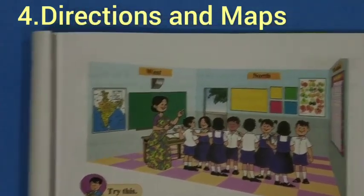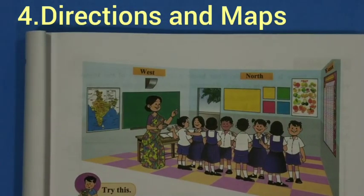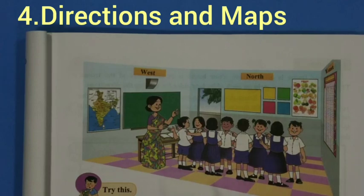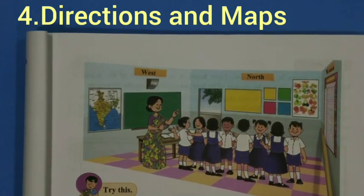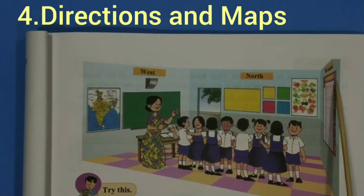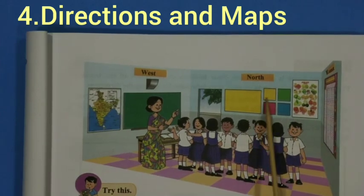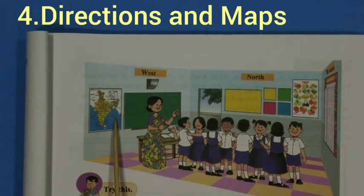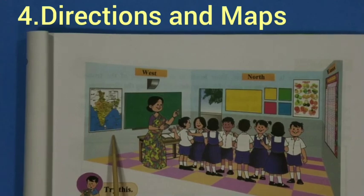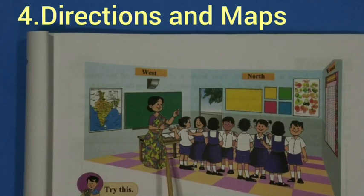To solve this, we can write the directions: west, north, east, and south. Then the teacher can say 'come on children, see to the east' and everyone will look at the chart. There will be no confusion. This is how directions help us know the location of a place.